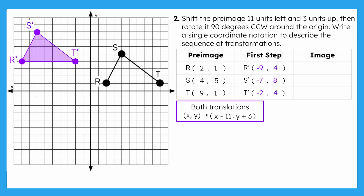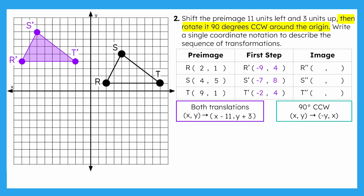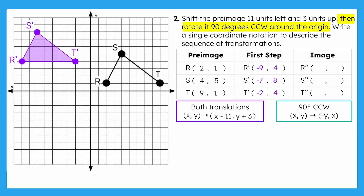What's our next transformation? A 90-degree counter-clockwise rotation around the origin. There are different strategies for performing a rotation, and we know that the coordinate notation for a 90-degree counter-clockwise rotation is negative y comma x. Take a moment to perform the rotation to find RST double prime. Pause now and come back once you're done. Using the coordinate notation, we switch the coordinates and the y-value changes sign to its opposite. Compare your coordinates with what's shown.